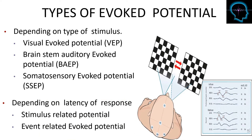Types of evoked potentials: depending on the type of stimulus, the evoked potential can be visual evoked potential, brainstem auditory evoked potential, or somatosensory evoked potential. Depending on the latency of the response, evoked potentials can be classified into stimulus-related potentials — which can be short, mid, and long latency — and event-related evoked potentials.